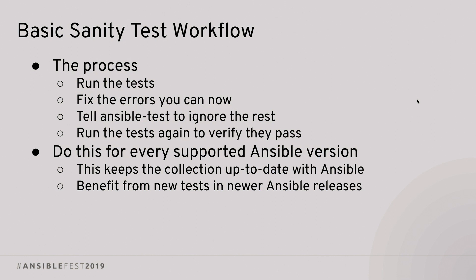Your basic sanity workflow looks something like this: run the tests once, fix the errors you can, and ignore the rest — but make sure you put those in the ignore file so you're getting the benefit. Then run tests again to make sure your ignore entries are complete and everything's passing. Do this for every version of Ansible you're supporting with your collection. If you're waiting for stable releases, start with Ansible 2.9. When 2.10 comes out, add it; same for 2.11. Once versions are deprecated and no longer supported, feel free to remove those ignore files. This is important because each new Ansible release includes new tests and changes to tests.